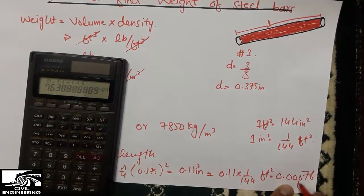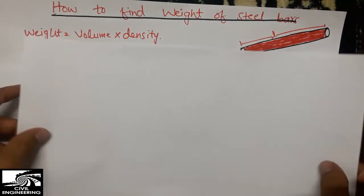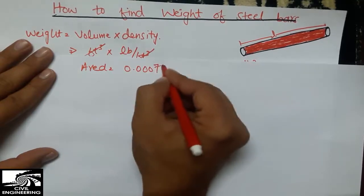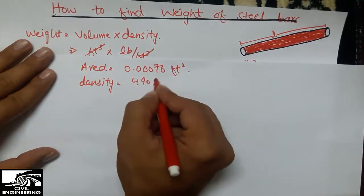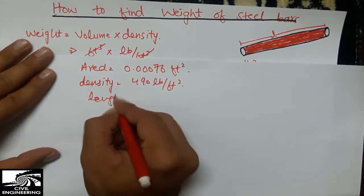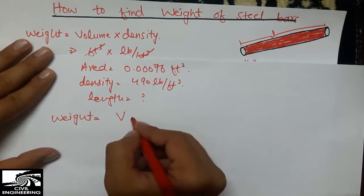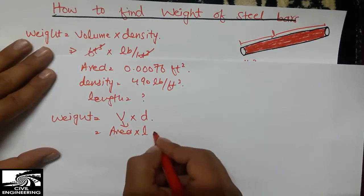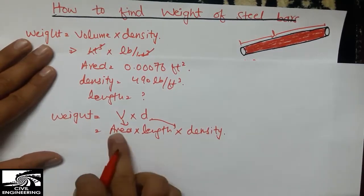The area of the Number 3 bar is 0.00076 square feet. The density is known: 490 pounds per cubic foot. The length L is unknown. So weight equals area × length × density: W = 0.00076 ft² × L × 490 lb/ft³.